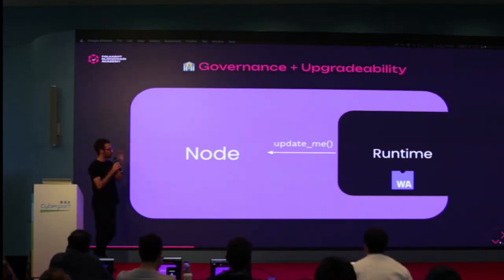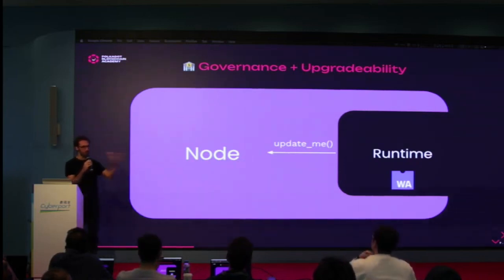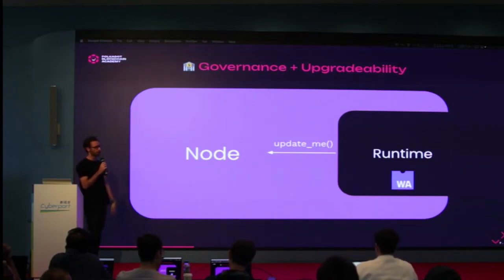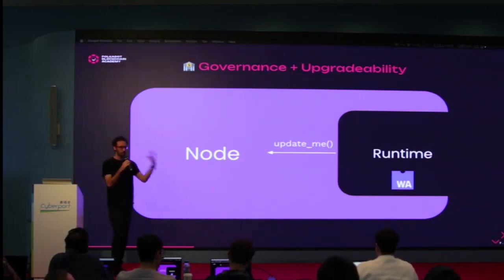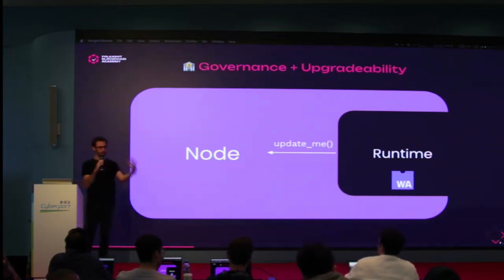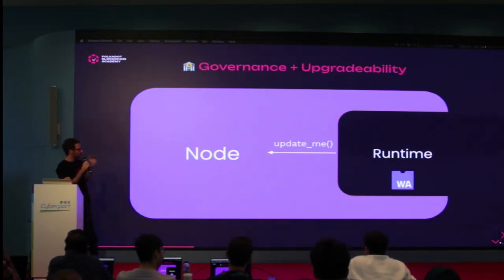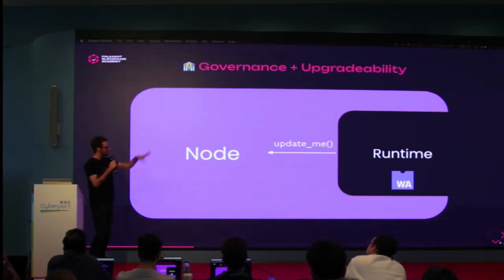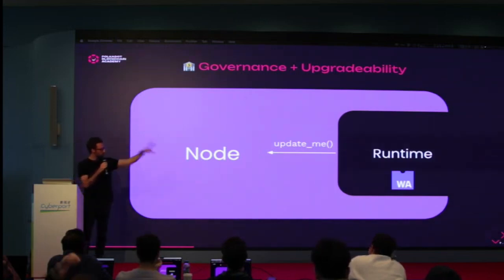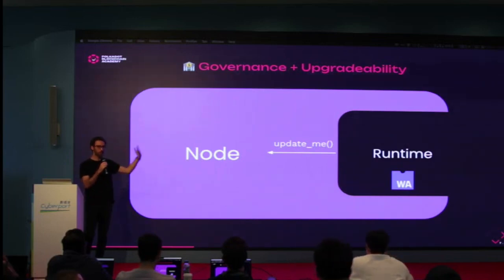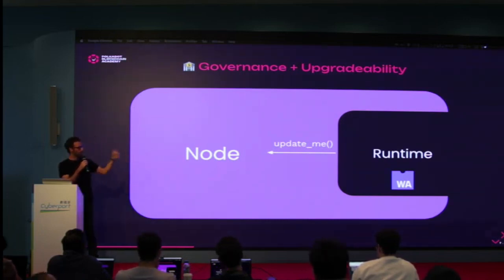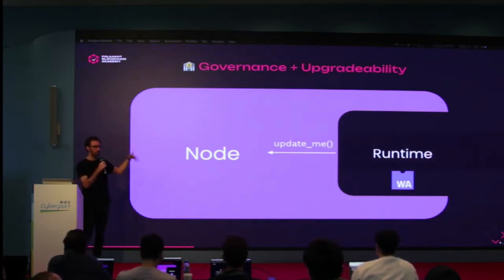A Substrate node is the part of the blockchain you don't want to change as frequently — the networking code that no one cares about for years, or the database that is fixed and doesn't change as often. The runtime is the part of the blockchain that's actually the application logic — the part people are interested in, want to change, want to be flexible and upgradeable. You already learned about contracts — a contract is some code stored somewhere in a blockchain. The key to make this design upgradeable is that the runtime is encoded as bytecode and stored as part of the blockchain. We use WebAssembly here, so the runtime of a Substrate-based chain is encoded as WebAssembly and kept as part of the state of the blockchain.